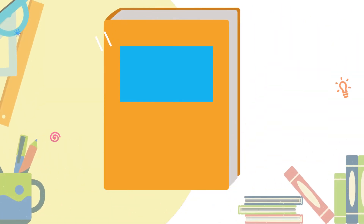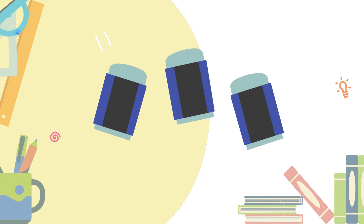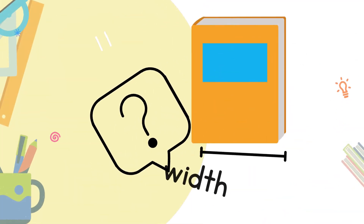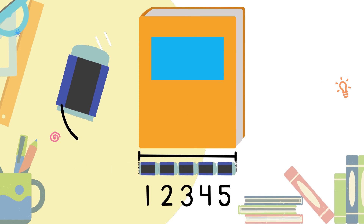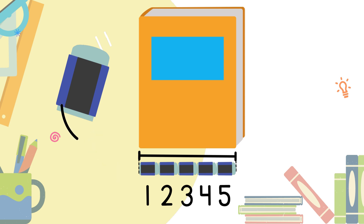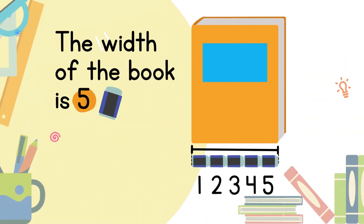Now look here. What do we have here? We have a book. And we have erasers. We want to measure the width of the book. We can measure the width of the book using the erasers. We arrange the erasers just like what I show you in this picture. So we have 1, 2, 3, 4, 5 — 5 erasers. The width of the book is 5 erasers.